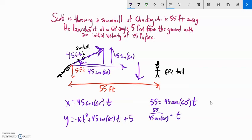I'm going to do that on my calculator. Make sure you put that whole denominator in parentheses—45 cosine of 60. Make sure you're not in radians. 55 divided by (45 cosine 60), I get 2.4 repeating.